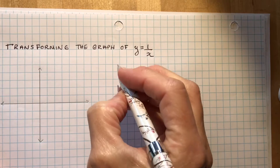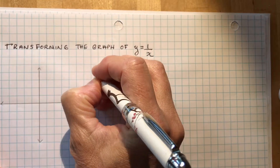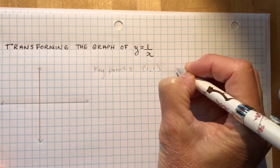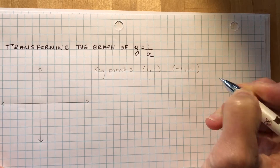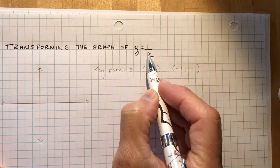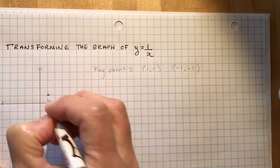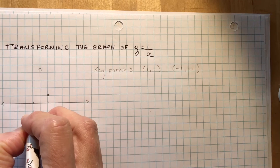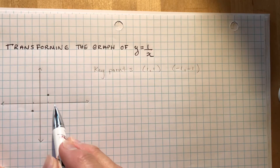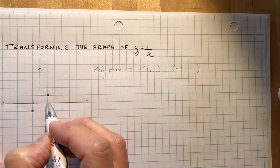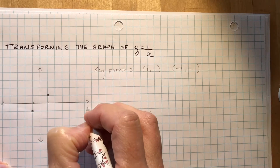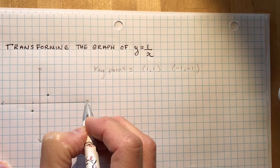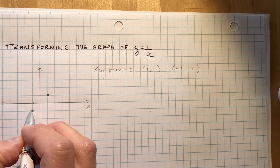The two key points of the graph of y equals 1 over x are (1, 1) and (-1, -1). When I put 1 in for x, 1 over 1 is 1, so (1, 1) is a key point. If I put in negative 1, 1 over negative 1 is negative 1. As x gets larger, if you put 1 over a really large number, it's going to approach the axis but never cross it.